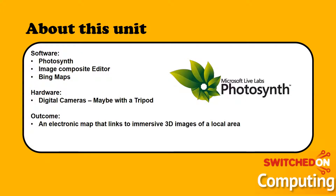There are a few things you need to know about this unit. Beforehand you need to get a copy of Photosynth or have access to the website. You need Image Composite Editor, Bing Maps, and also good if you've got digital cameras. It also depends on whether you've done bring your own device in your school. What we should have at the end of it is an electronic map that links to the 3D images that the students have been creating.